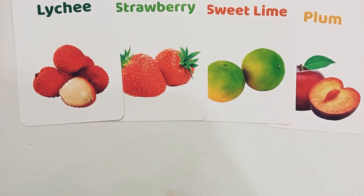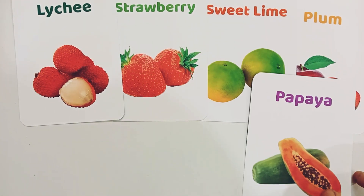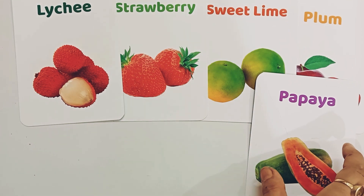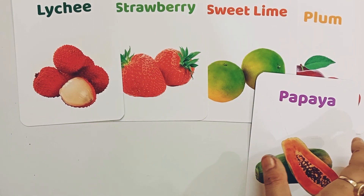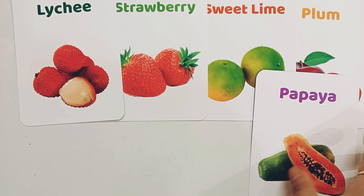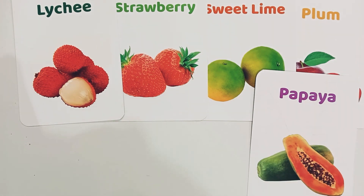Which is a fruit? P for papaya. P-A-P-A-Y-A, papaya. P for papaya. P-A-P-A-Y-A, papaya. Papaya is a fruit.